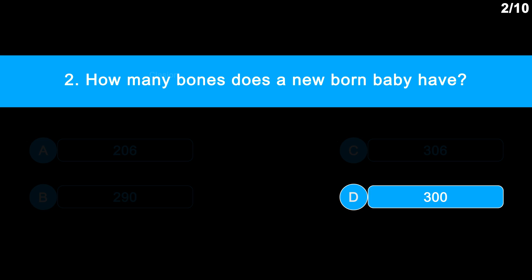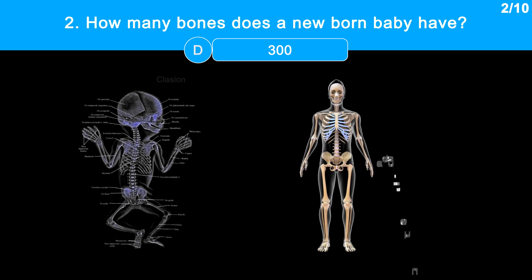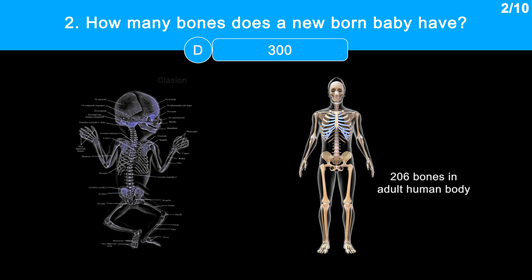Let's see how. There are about 300 bones in a newly born baby. At birth, the newborn skeleton is a work in progress, and many of the bones blend together during growth years to form the 206 bones that adults have.